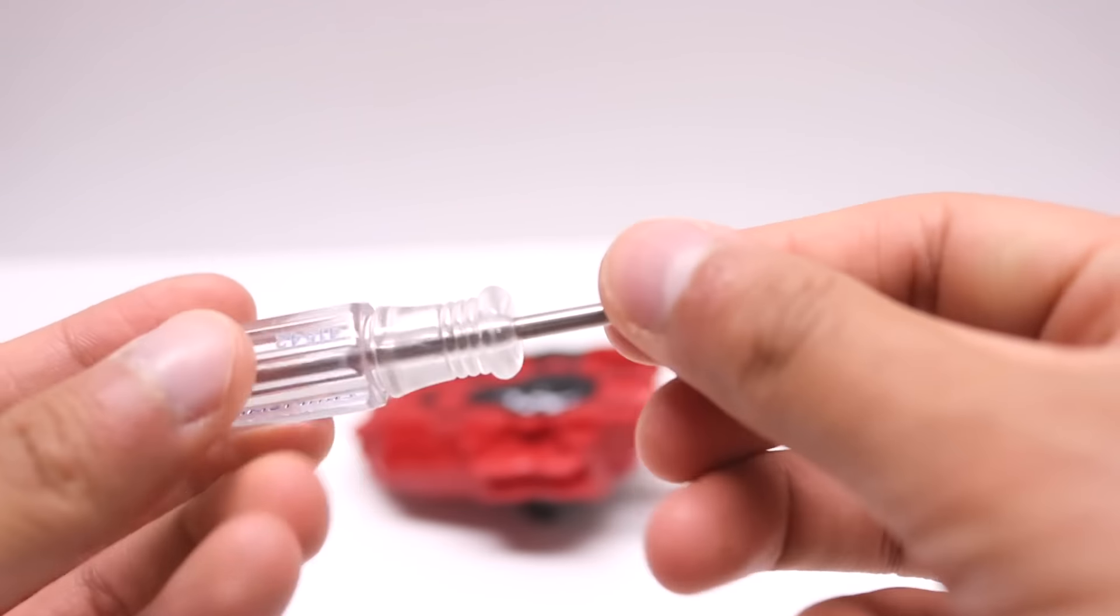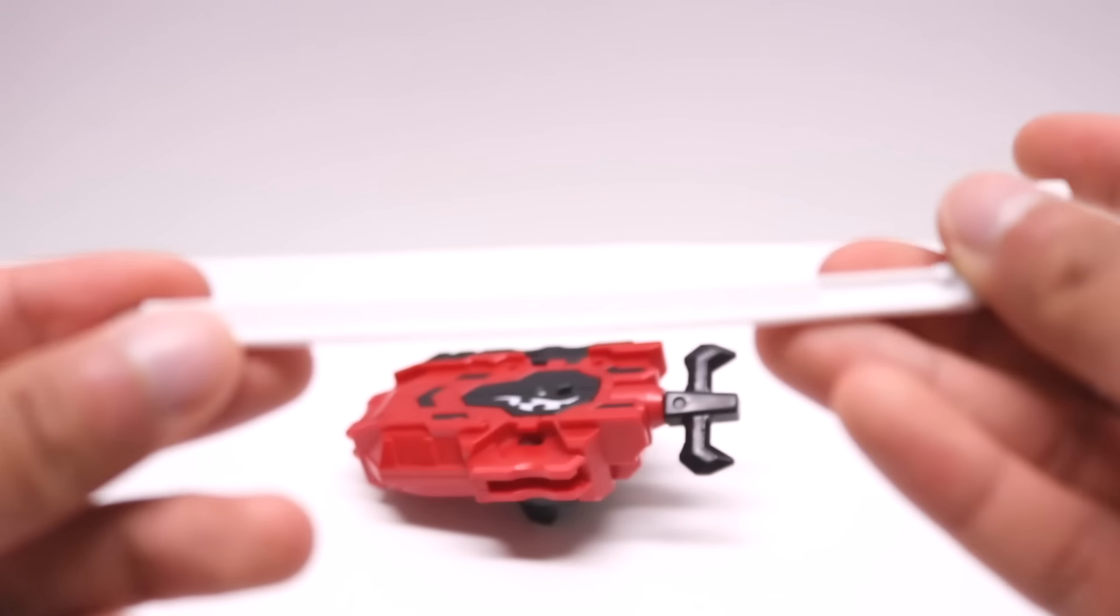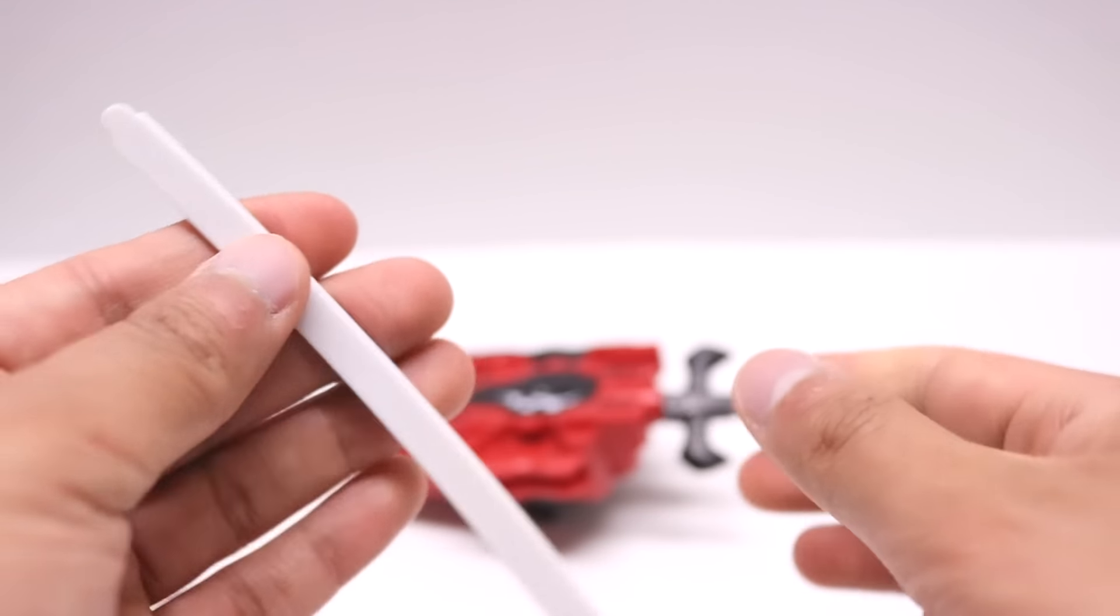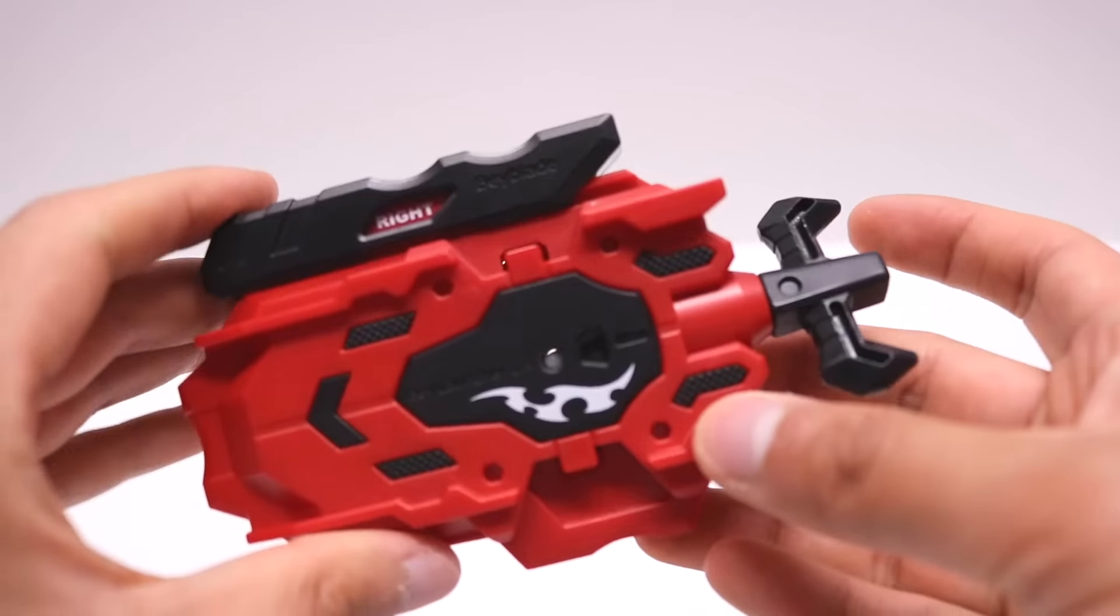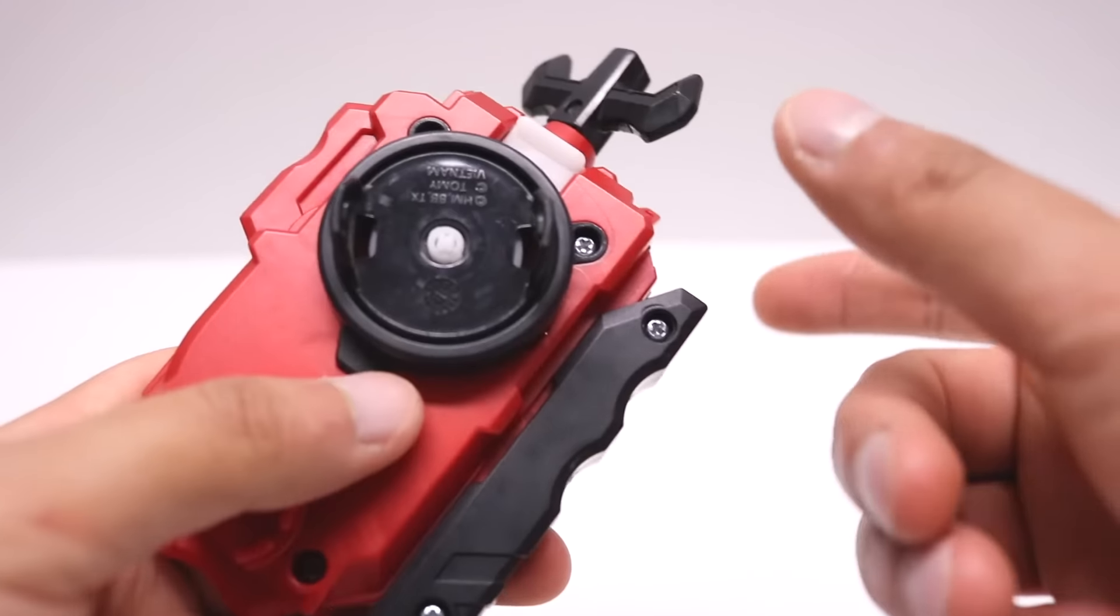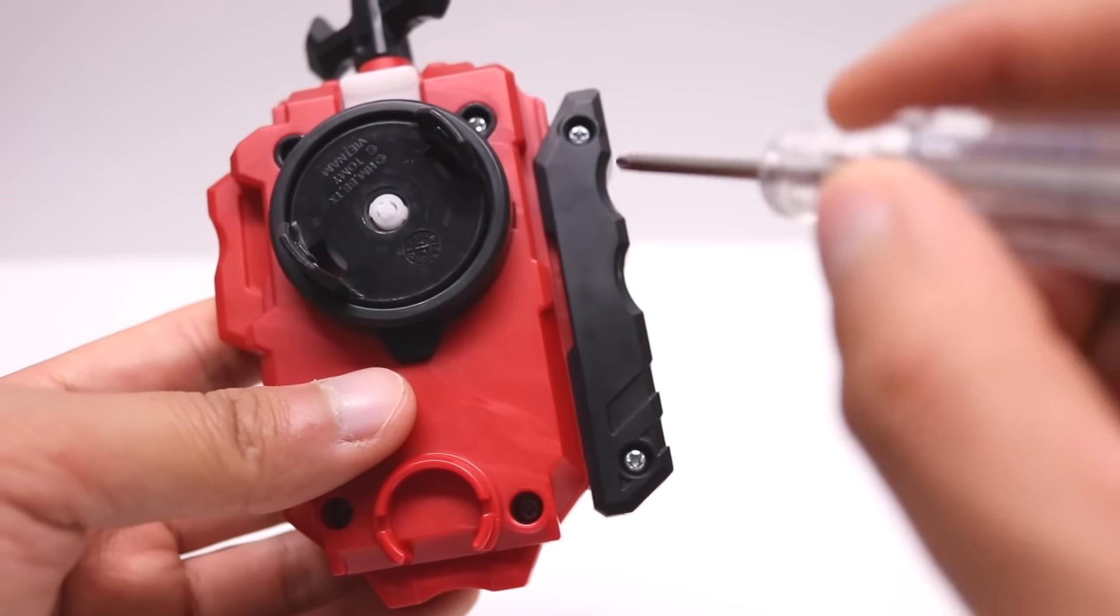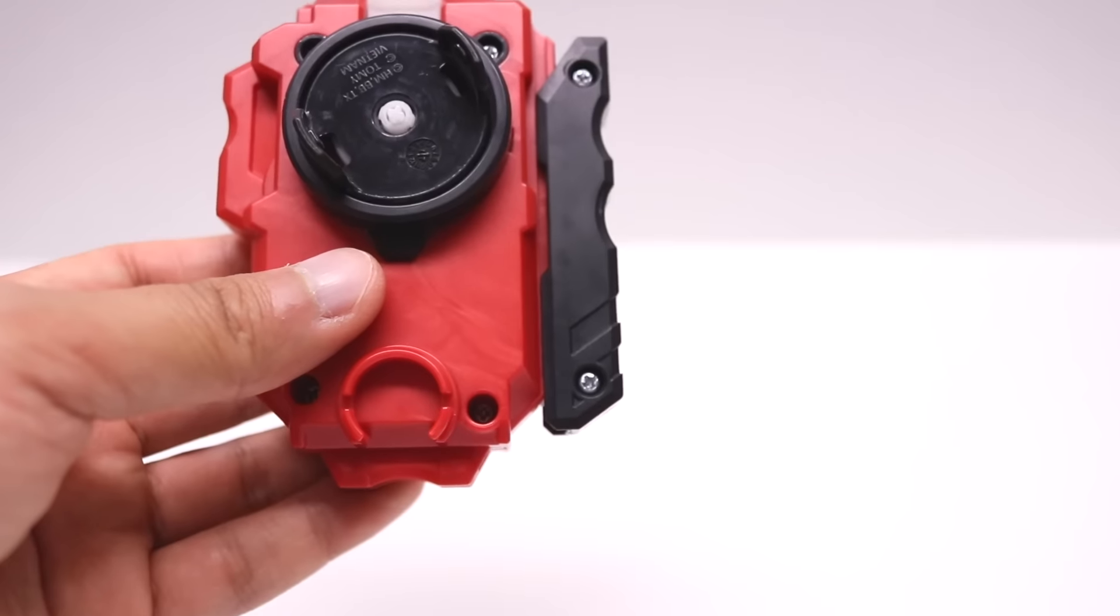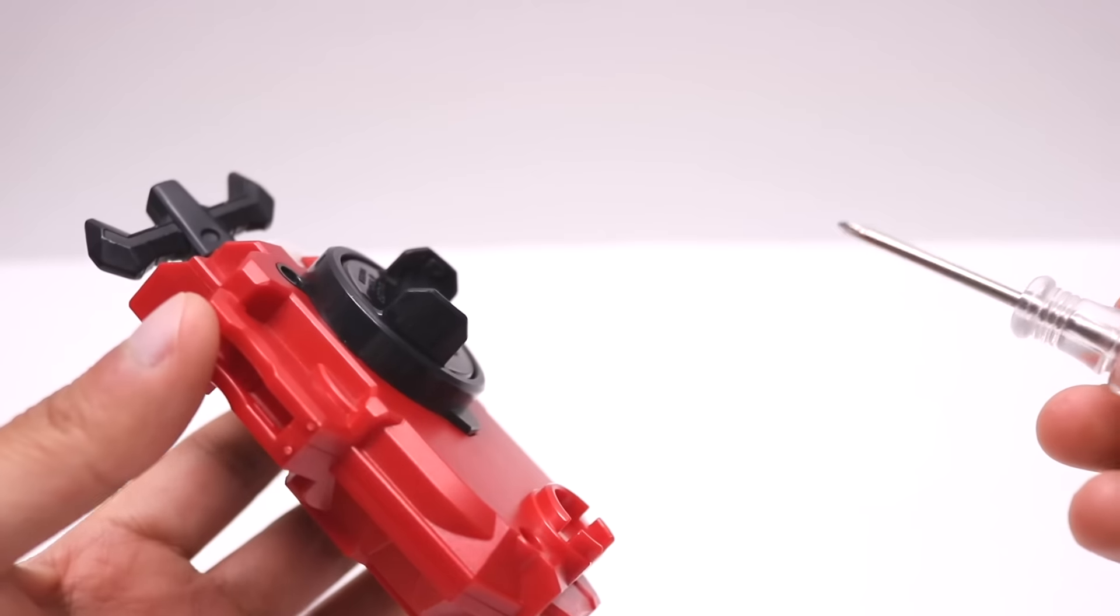You're only going to need a Phillips head screwdriver, just your basic Phillips head, the cross type, and then a flat edge or something with a flat edge. I'm using this ripcord for the Proto Launcher. It's got a nice flat edge to it, and you need that to reset the spring. Your first step is going to be, just to take it apart, you're going to need to get four screws on the body and two screws on the switch. You want to make sure you get all six, because you can't take it apart without doing that.